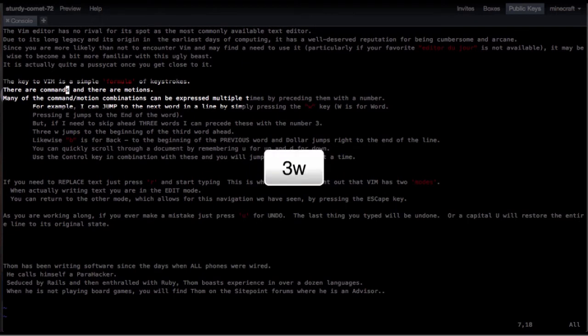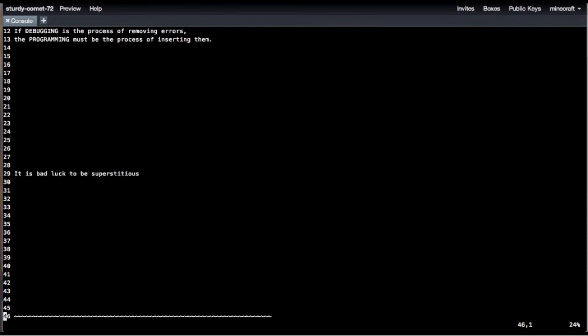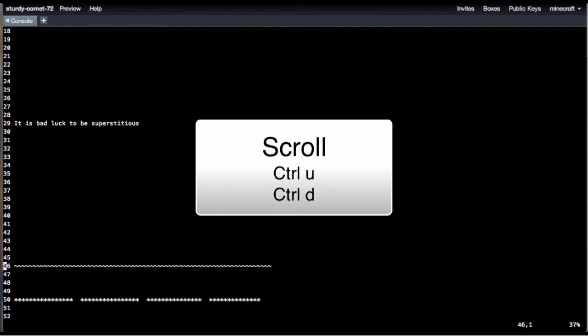Likewise, B is for back, and pressing four B takes me back four words. Dollar jumps right to the end of the line. You can quickly scroll through a document by remembering U for up and D for down. Use the control key in combination with these and you will jump half a screen at a time.